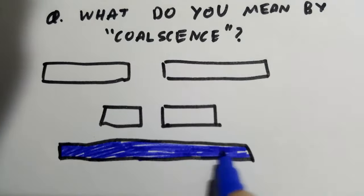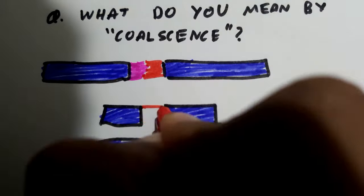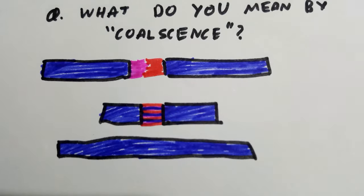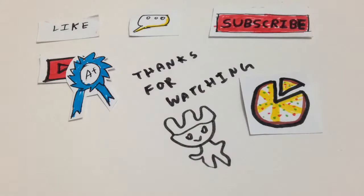In engineering, coalescence means to bond pieces of metal into a continuous whole by liquefying parts of each piece, bringing the liquids into contact, and then allowing the combined liquid to solidify. So like, subscribe, and comment with your feedback to help us make better videos. Thanks for watching.